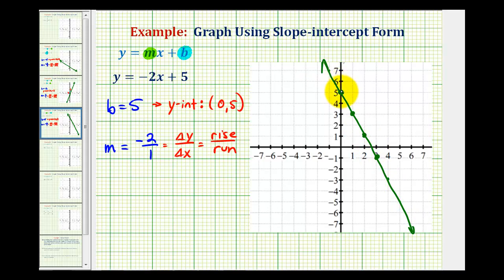Again, notice we had a y-intercept of positive 5, and then from here, with a slope of negative 2, we went down 2 units and right 1. We went down 2 because of the negative 2, and we went right 1 because of the positive 1.